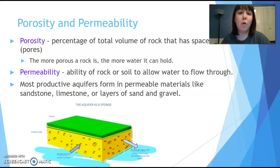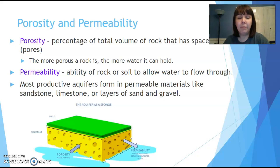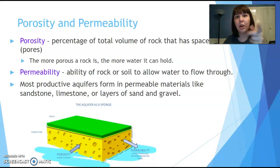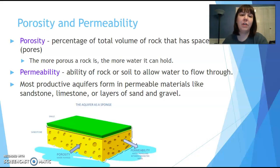Aquifers are useful to us if they have porosity and permeability. Porosity refers to how much of the rock is open — think of the holes in a sponge. The more porous it is, the more water it can hold. Permeability is how connected those porous spaces are. If it's very permeable, water flows easily and you can get it out. If the porous spaces are poorly connected, you can't get the water out even if there's plenty of it. The best aquifers are both porous and permeable.